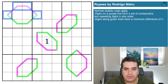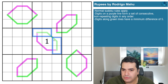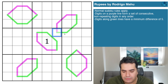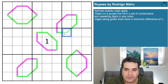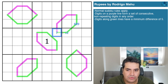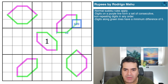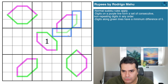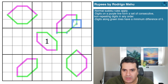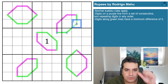Digits along green lines have a minimum difference of five — half of every rupee is essentially a green line, and normally we would be calling these German whispers. For example, if this is a seven, the next digit would have to be five away: one or two. We're oscillating between high digits six, seven, eight, nine and low digits one, two, three, or four. Notice I've not listed five — five away from five would be zero or ten, neither of which are allowed under normal Sudoku rules.